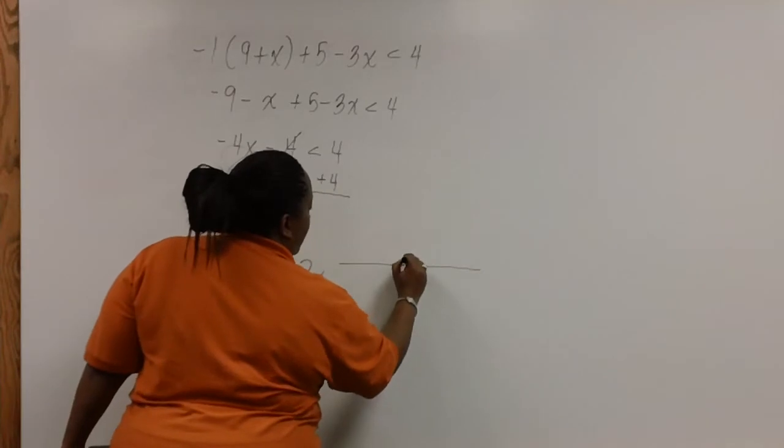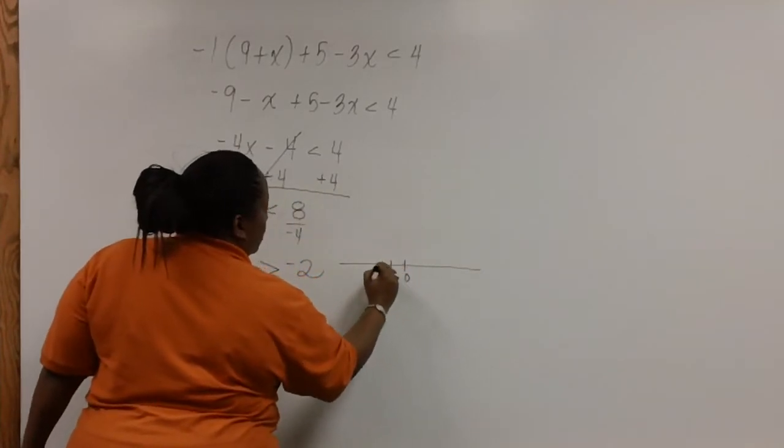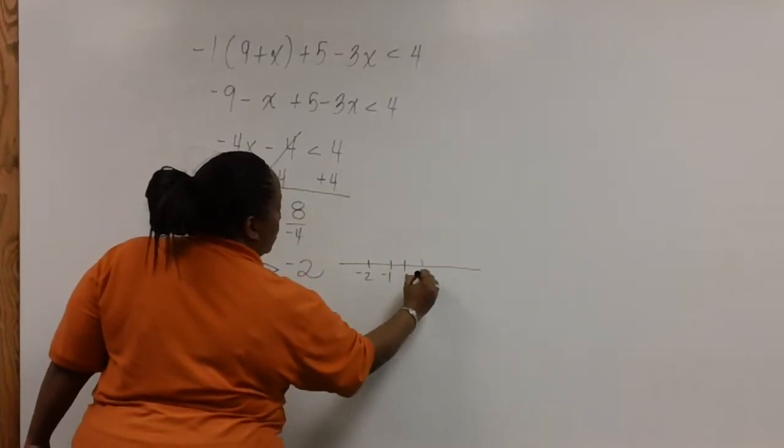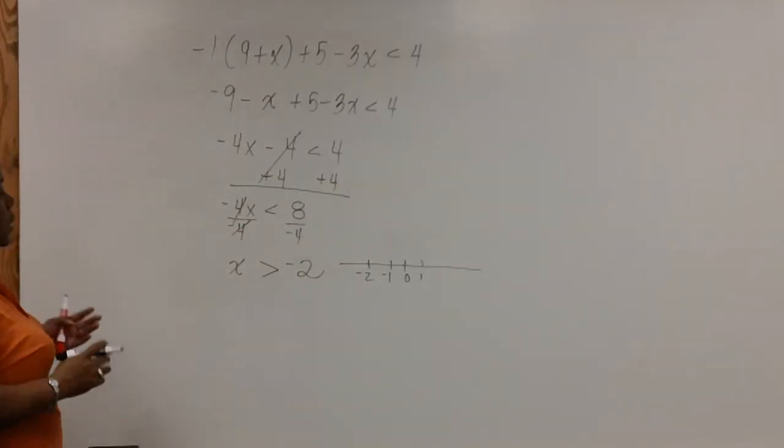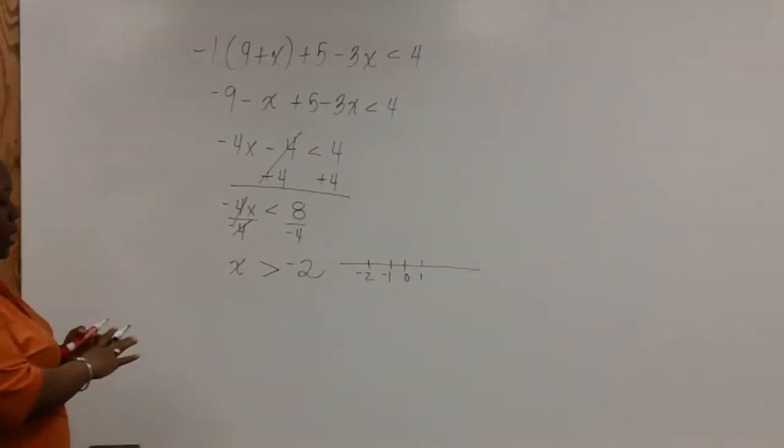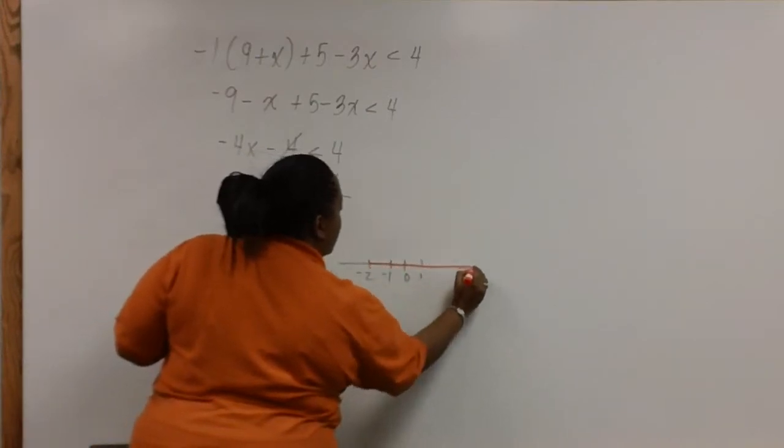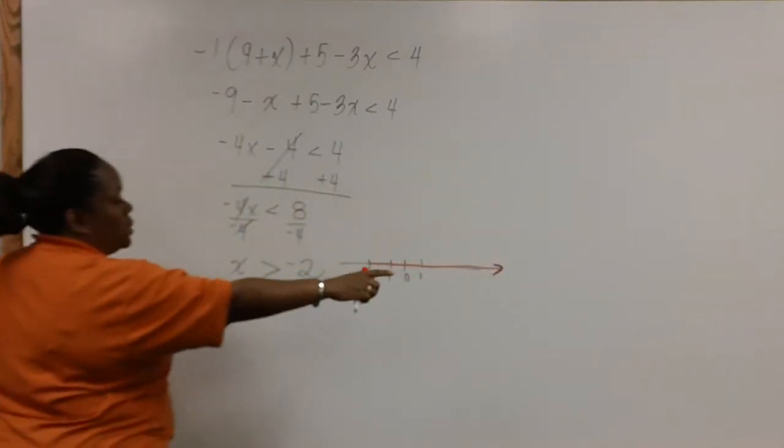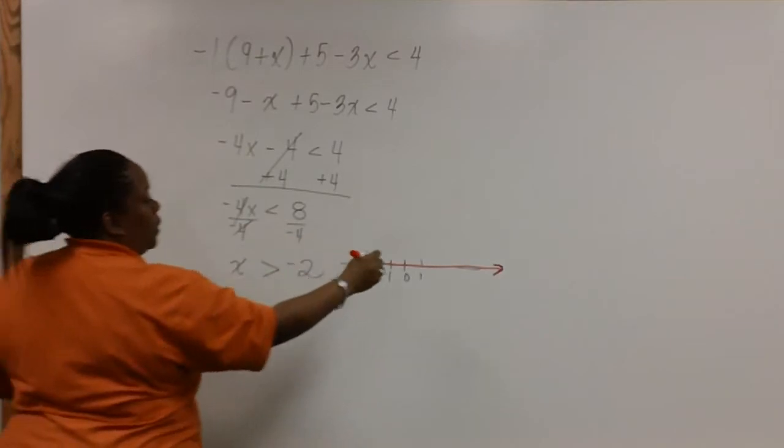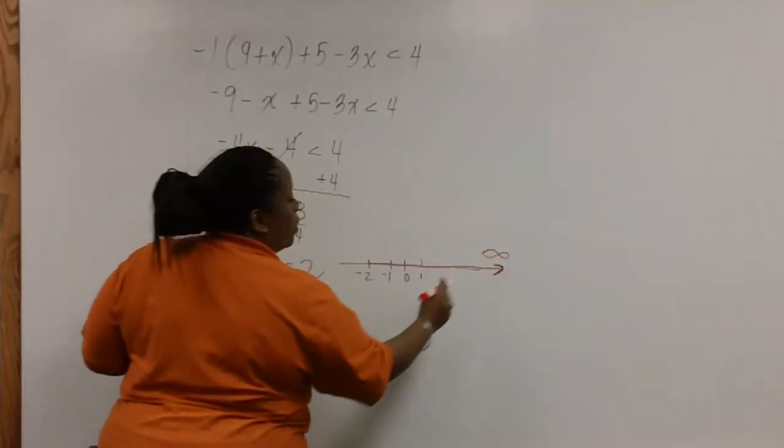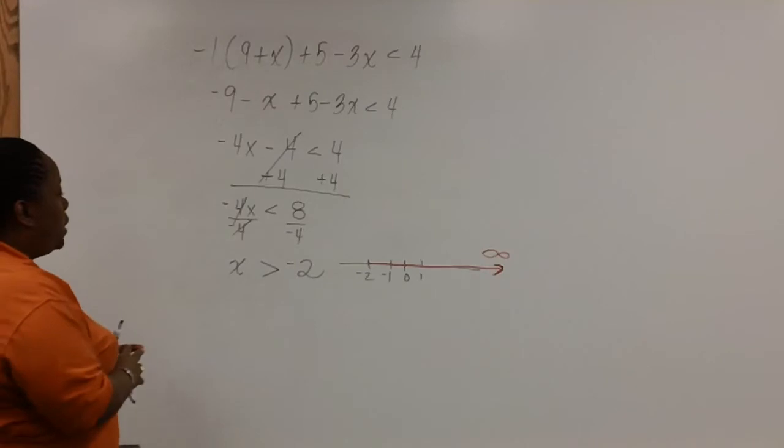Now we need to sketch a graph. All numbers greater than negative 2 lie to the right of negative 2. This arrow is pointing towards positive infinity.